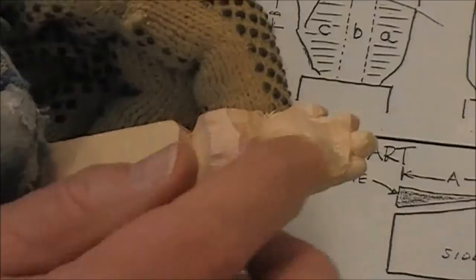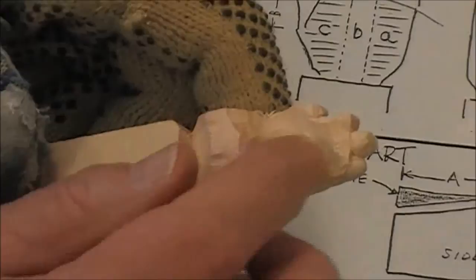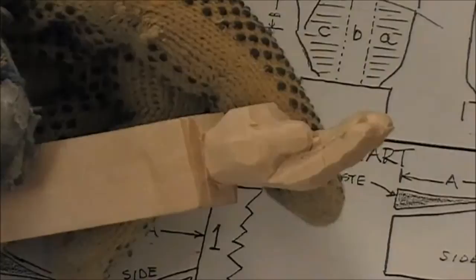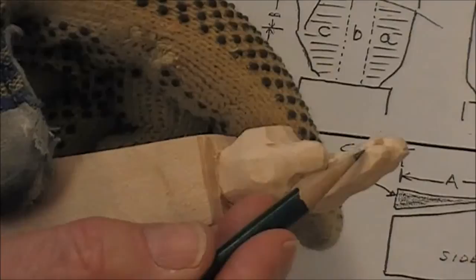Now we're going to start working on the palm and the inside of the fingers. Draw on the general shape you want for a finger, and notice that there is scoops in the finger, that it scoops and scoops and scoops, and the reason for that is...